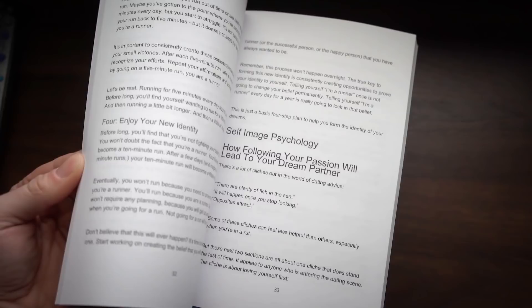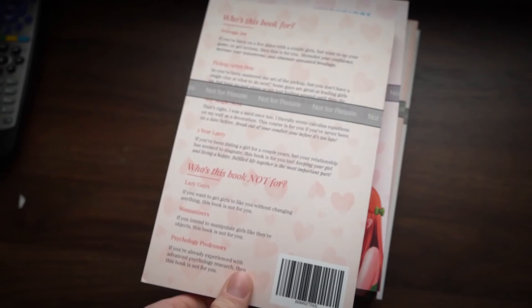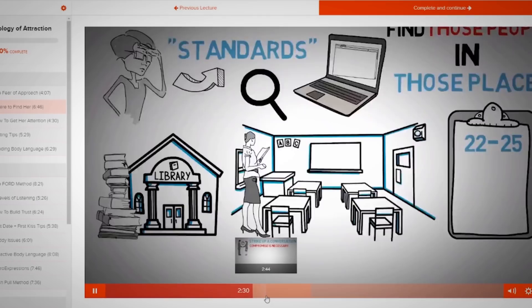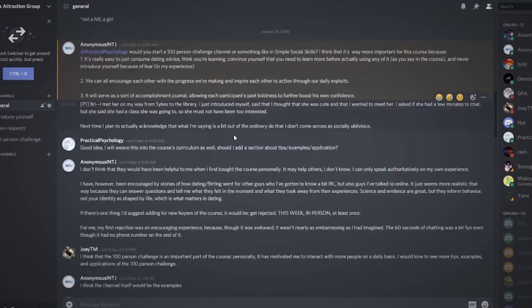And if you want it, you can enroll in Psychology of Attraction 2.0 before midnight on Valentine's Day, and I'll ship it right to your house. Plus, you'll get instant access to the full course containing over 50 lectures on topics like reading body language, overcoming approach anxiety, and a step-by-step framework for asking a girl out.